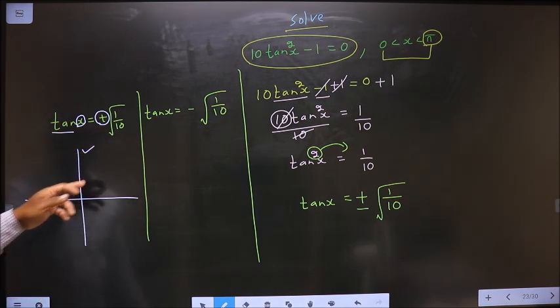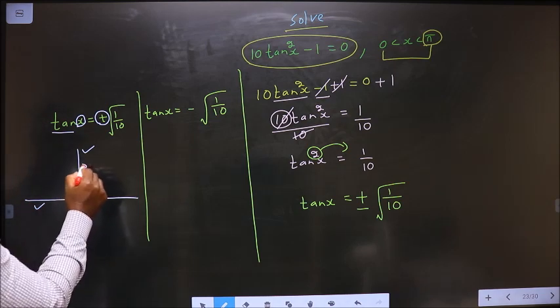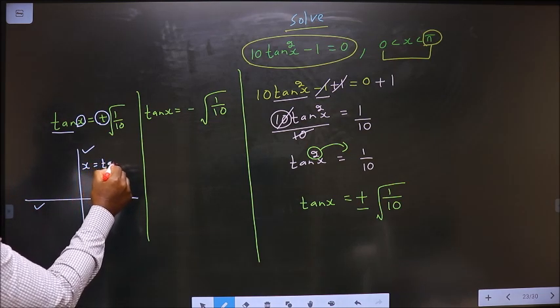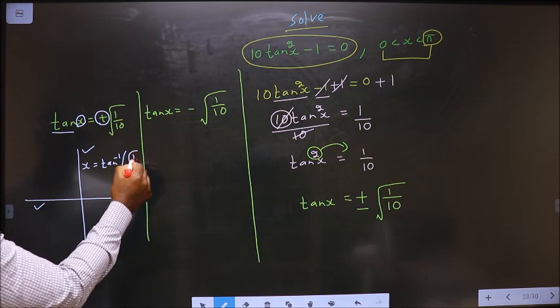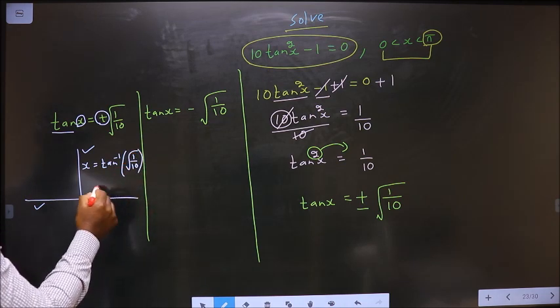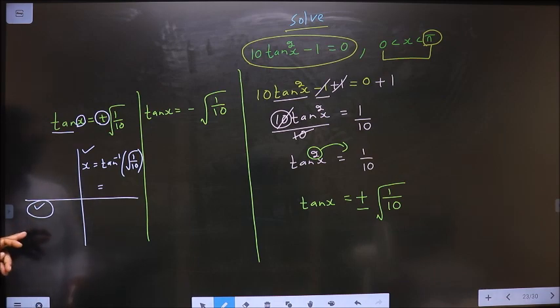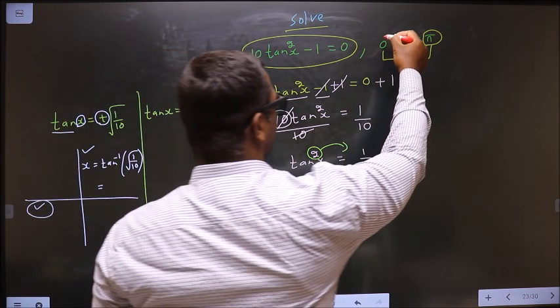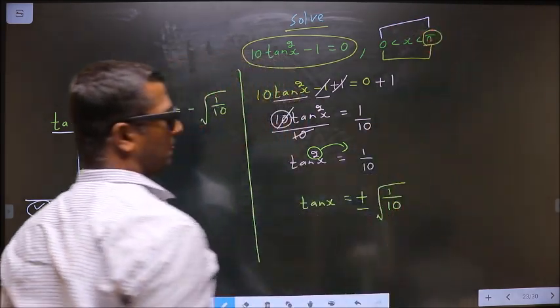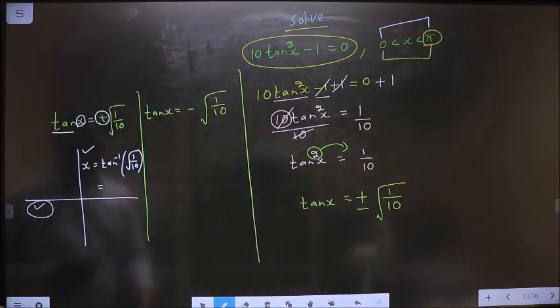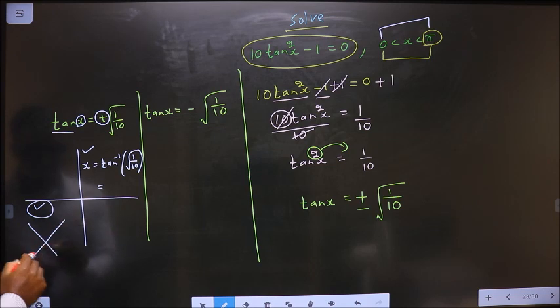To get an angle in the first, we do directly tan⁻¹(√(1/10)). Now see, this angle in the third quadrant does not lie in the given interval. That means we do not need to find the angle in this quadrant.